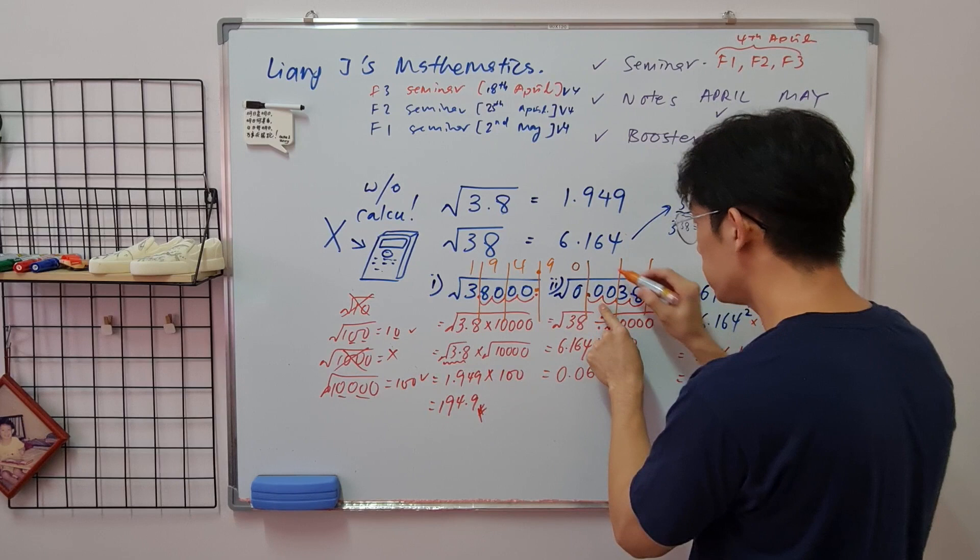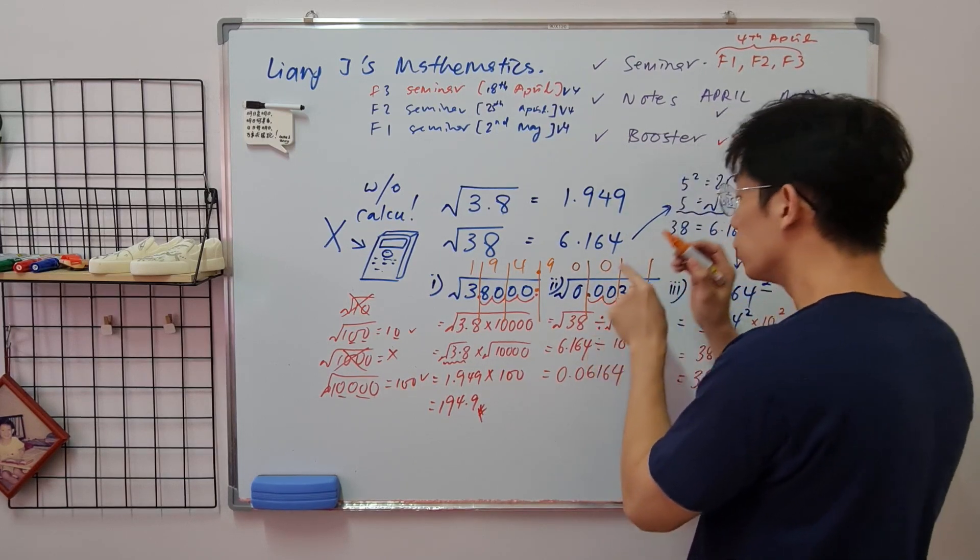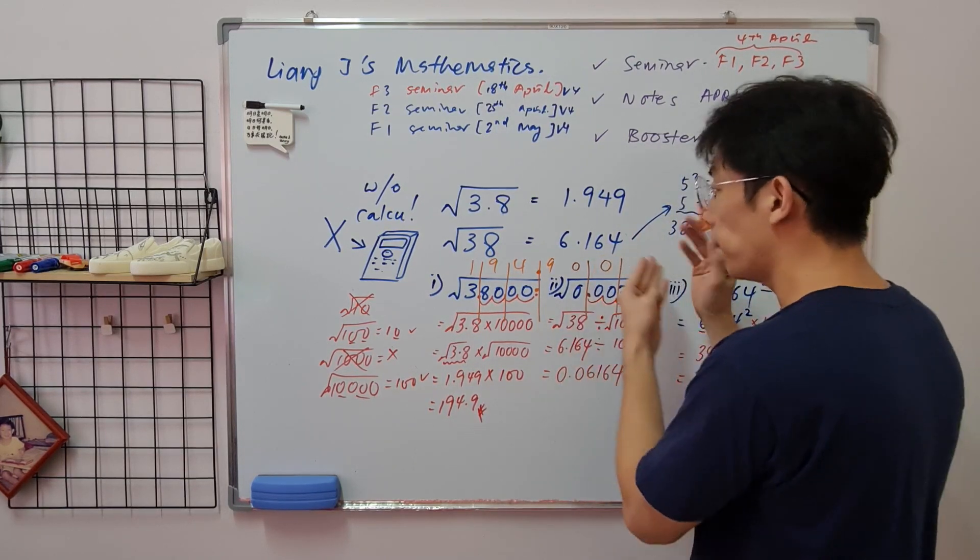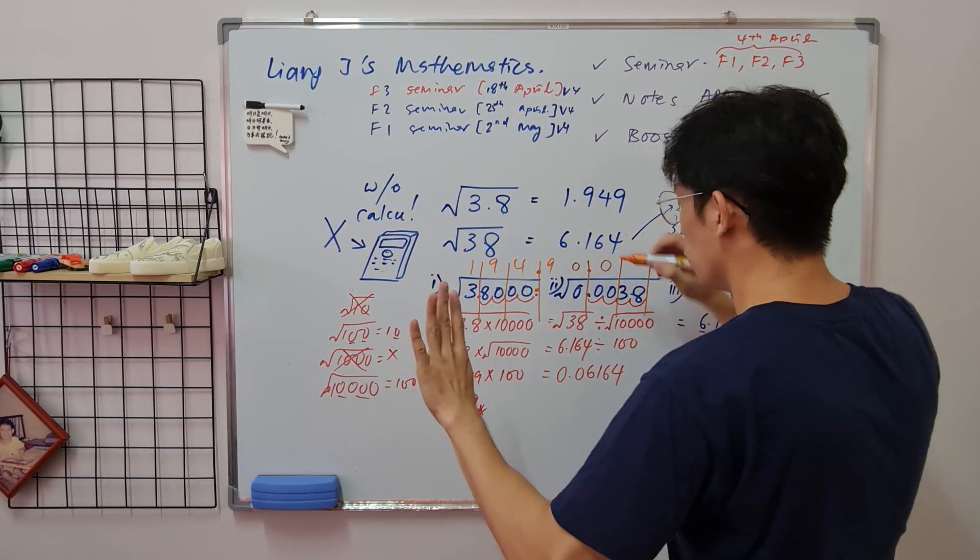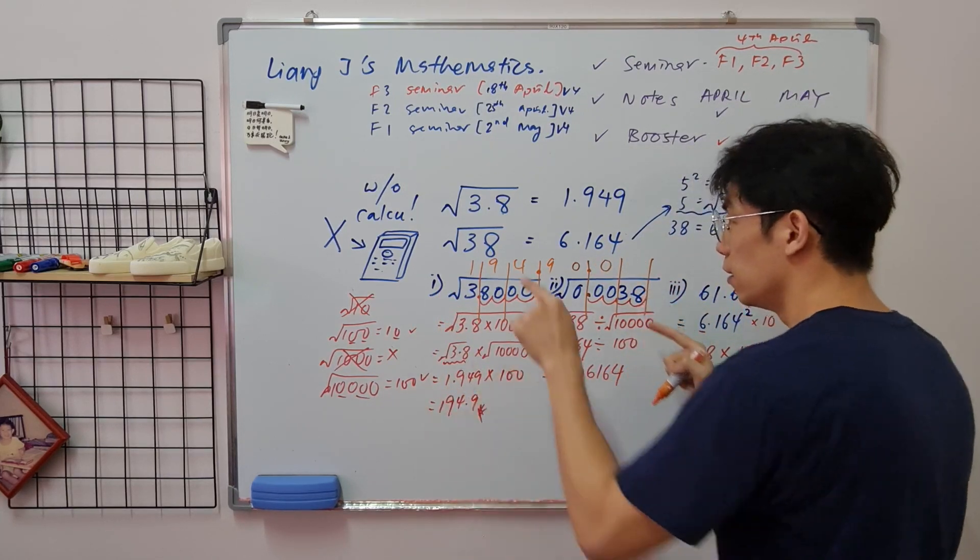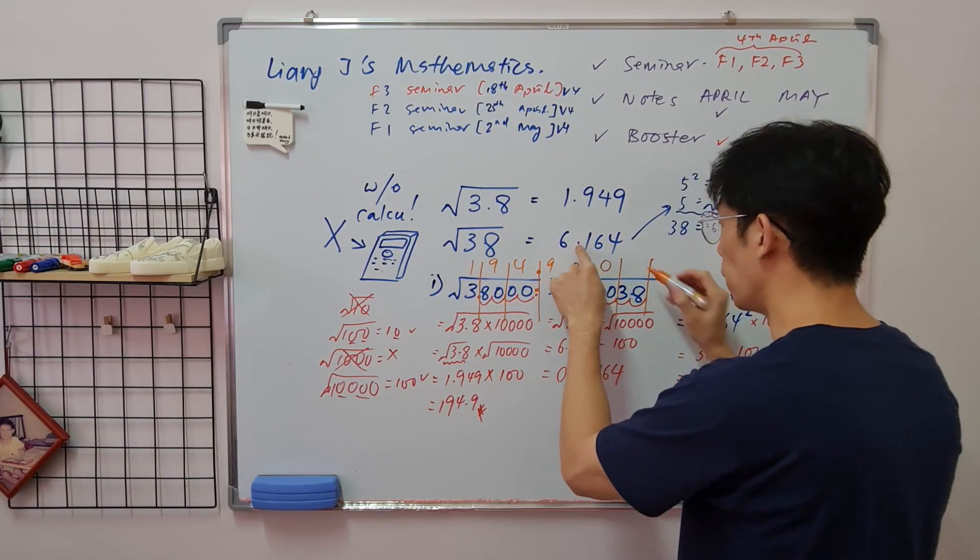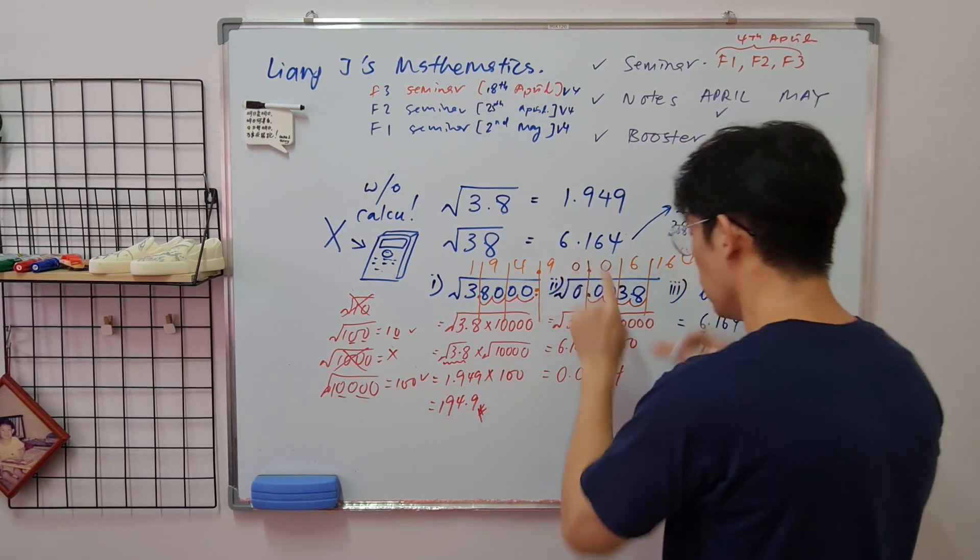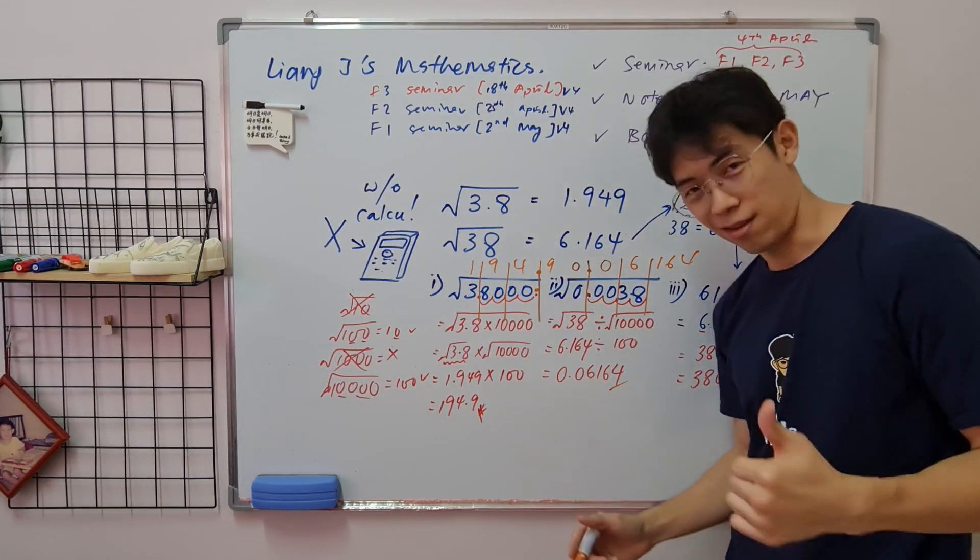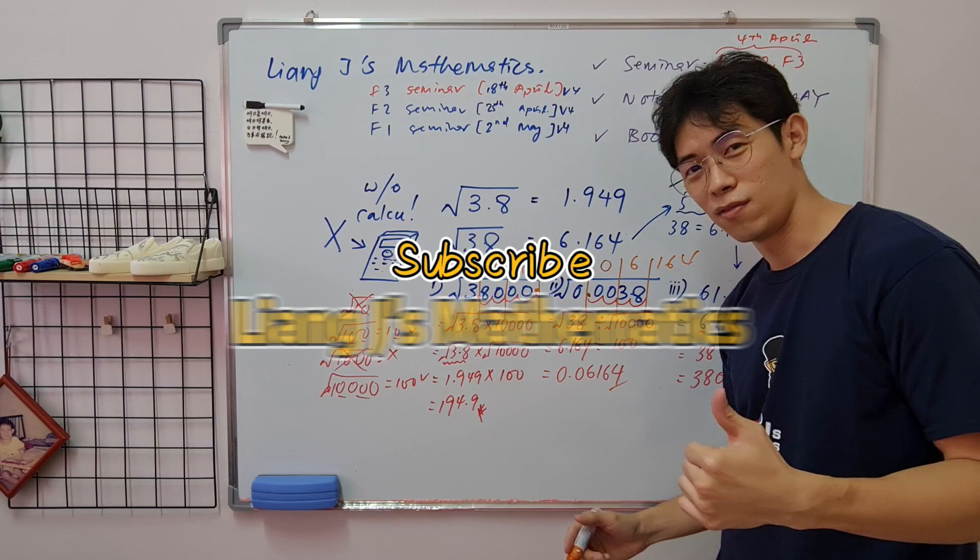Okay, wait. Which one you're going to choose? 38. Don't care about decimal point. 6, 1, 6, 4. Saw that. So that's how you do it.